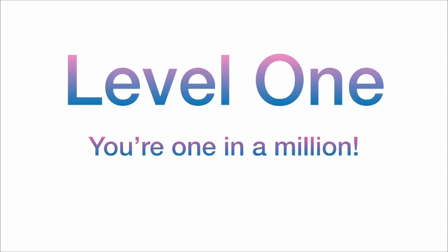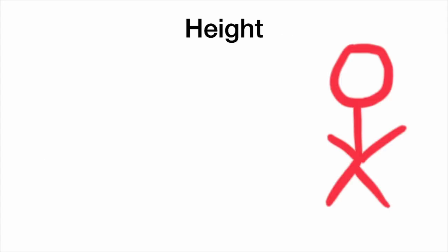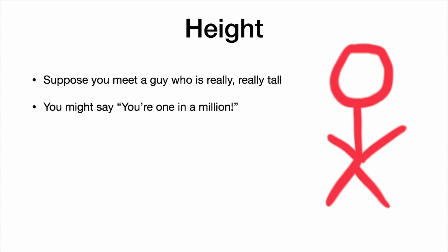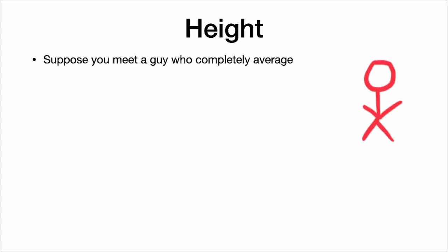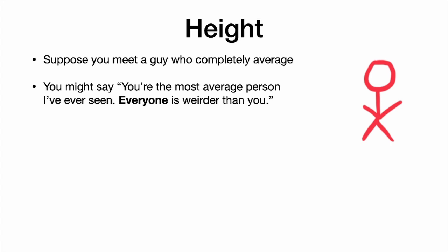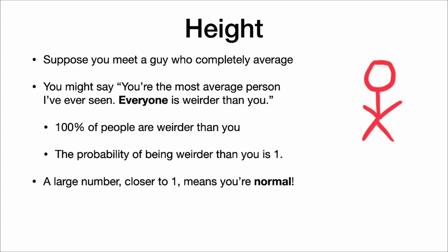Level one: you're one in a million. A p-value is a measure of how weird our observed data is. Suppose you meet a guy who is really, really tall — you might say, 'you're one in a million.' One out of a million is .000001, so a small number means you're very weird. A small number indicates that we are surprised. Now suppose you meet a guy who is completely average in height. You might say, 'you're the most average person I've ever seen — 100% of people are weirder than you.' The probability of being weirder than you is one, so a large number closer to one means you're normal, not weird.